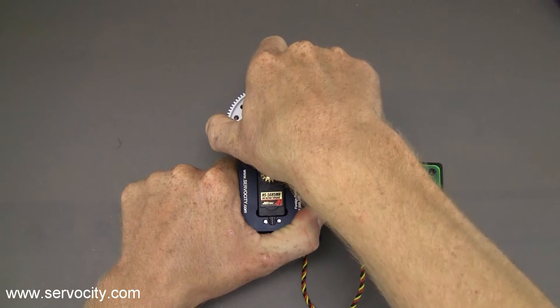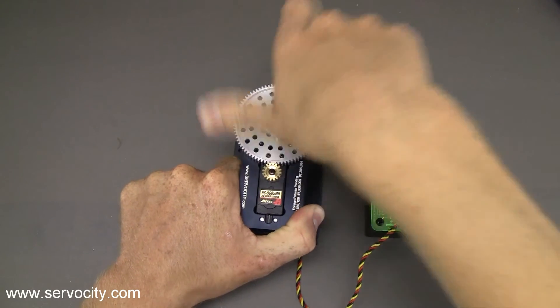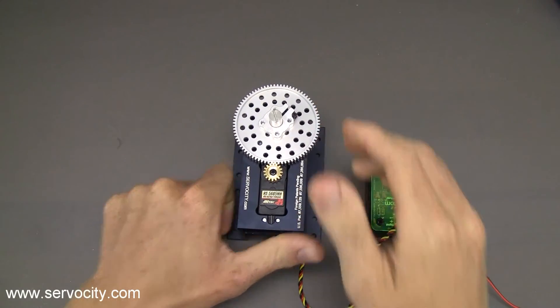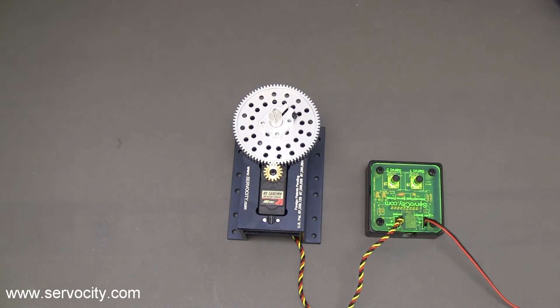So I'm going to try to rotate this by hand and it's very difficult to rotate. Now when I got inside of the mechanical limit of the potentiometer on the back side of the power gearbox, it went ahead and responded.